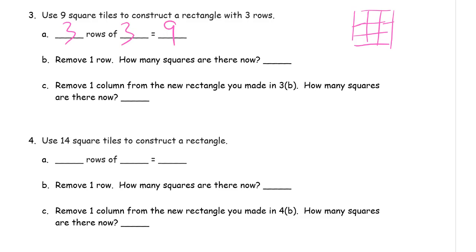Remove a row. So let's see if I can erase this without erasing too much here. So I would have that. And it doesn't say you have to draw yours. You don't. All you have to do is use the paper squares that you cut out. Remove a row. Now how many squares do you have? There's 6.